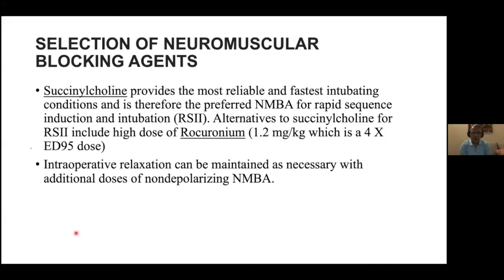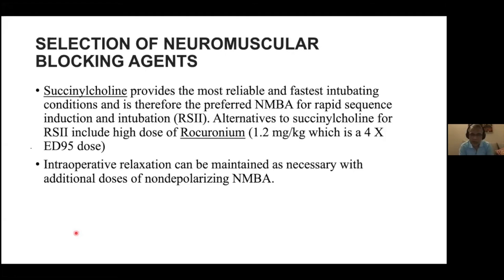When we select succinylcholine, it provides the most reliable and fastest intubating conditions and is therefore the preferred neuromuscular blocking agent for rapid sequence induction and intubation (RSI). We can also use rocuronium at 4×ED95, which is 1.2 mg/kg, achieving intubation in 60 seconds. After tracheal intubation, intraoperative relaxation can be maintained by any non-depolarizing neuromuscular blocking agent.